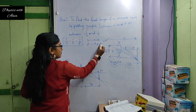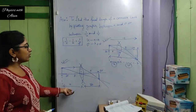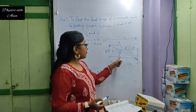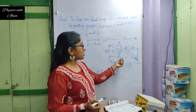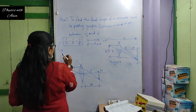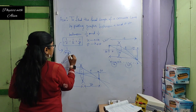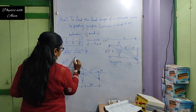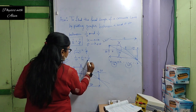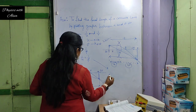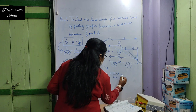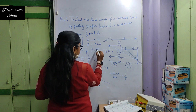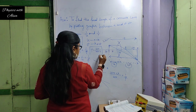So v is positive and u is negative in both cases. Substituting into the lens formula: 1/v − 1/(−u) = 1/f, which gives 1/v + 1/u = 1/f. From this, the working formula becomes f = uv / (u + v). This is the main working formula for this practical.